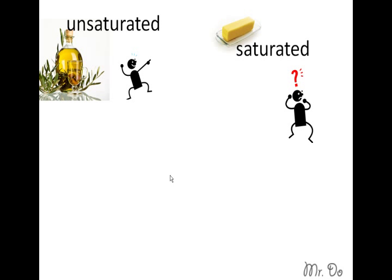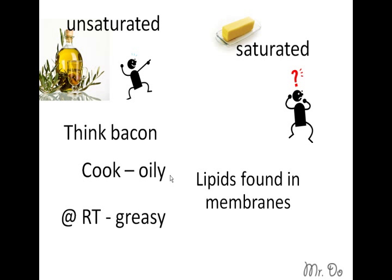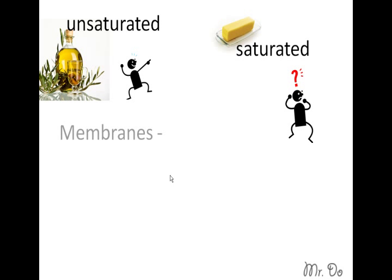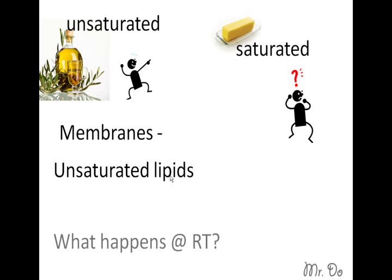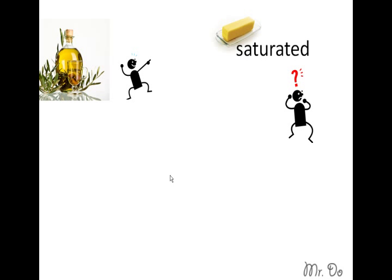Let's see how this can affect us. Think about bacon — when you cook it, it's very oily, but the moment it cools down to room temperature, it becomes very greasy. That's what happens to your membrane as well. Lipids are found in your membrane, and if you eat a lot of saturated fat, your membranes in your cell will tend to solidify at room temperature.